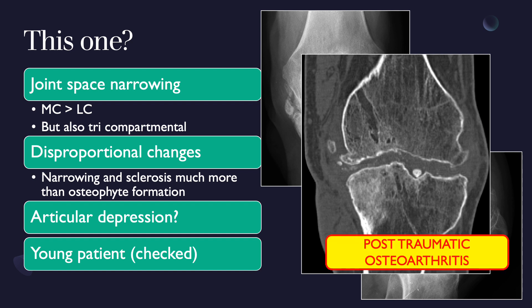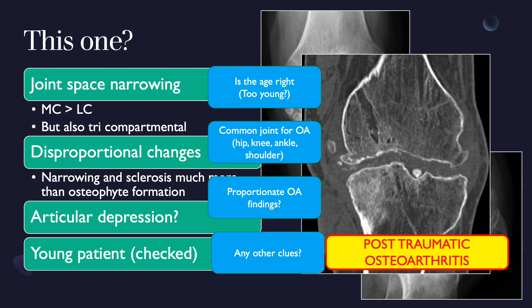On CT imaging, there is a linear track of metallic density from a previous intervention that has since been removed. Putting this together — disproportionate osteoarthritis in a young patient with an interventional tract — this points to post-traumatic osteoarthritis. The key alerts were disproportionate findings, young age, and the visible tract from a prior procedure.